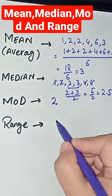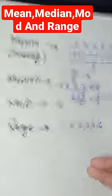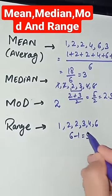Here, mode is 2 because 2 is the repeated number. Range is the difference between the largest and the smallest number.